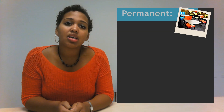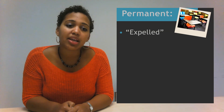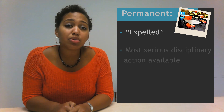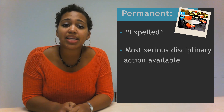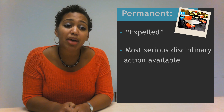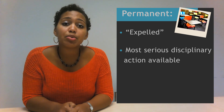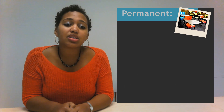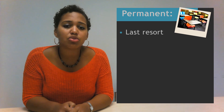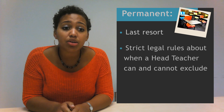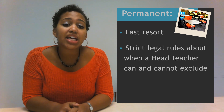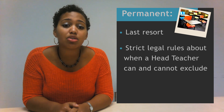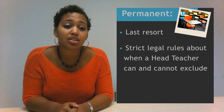We'll start with permanent exclusions. This is commonly referred to as being expelled. It is the most serious disciplinary action available to headteachers, and if the decision is upheld the pupil will no longer be allowed to attend the school and will have to be educated elsewhere. This type of exclusion should only be used as a last resort, and there is a strict legal rule that headteachers can only permanently exclude a pupil if certain conditions are met.